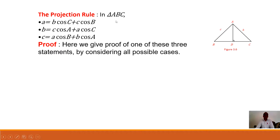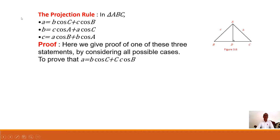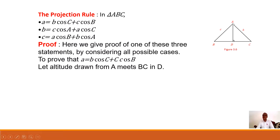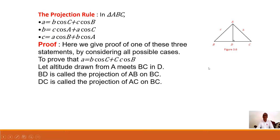Now the next topic is the projection rule. In triangle ABC, with sides a, b, c as the lengths of the sides, we consider the oblique triangle. We prove one of three statements. For the first projection rule, a = b·cosC + c·cosB. Let the altitude drawn from A meet BC at D. Then BD is called the projection of AB onto BC, and DC is called the projection of AC onto BC.